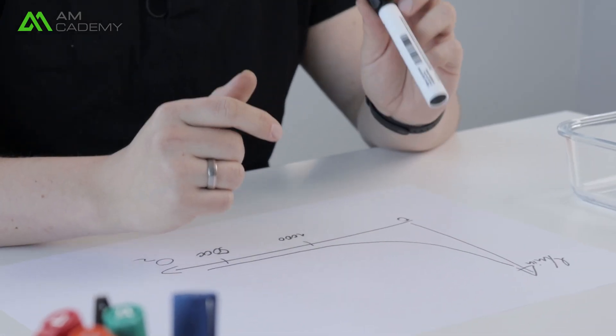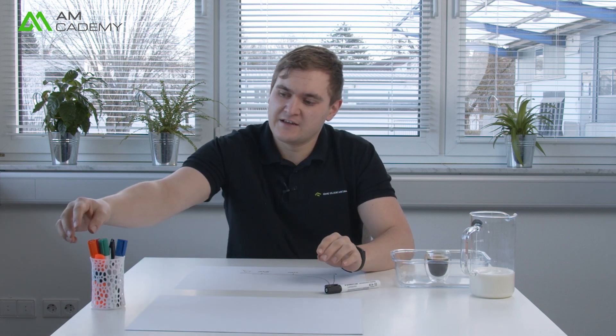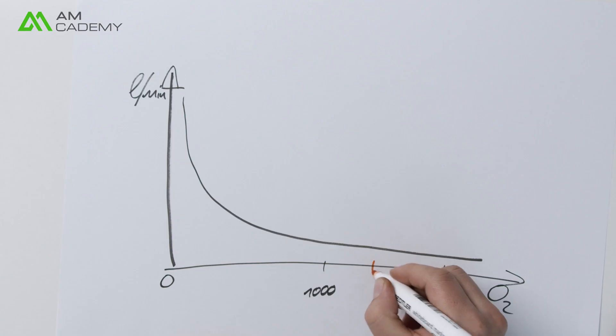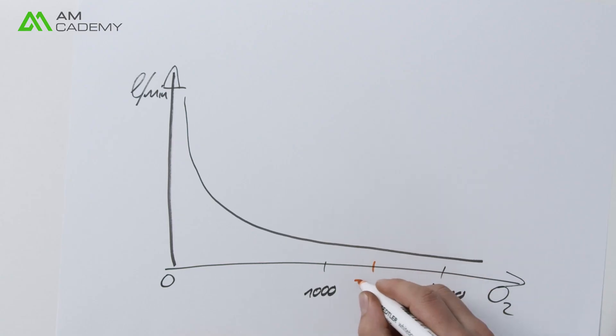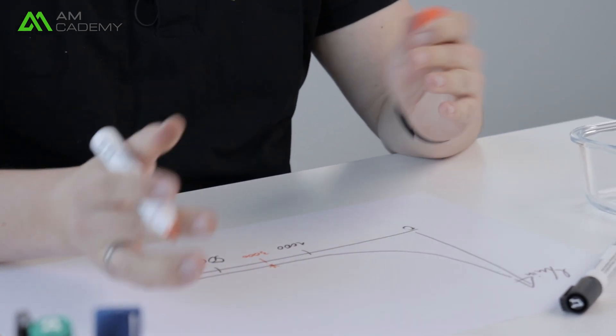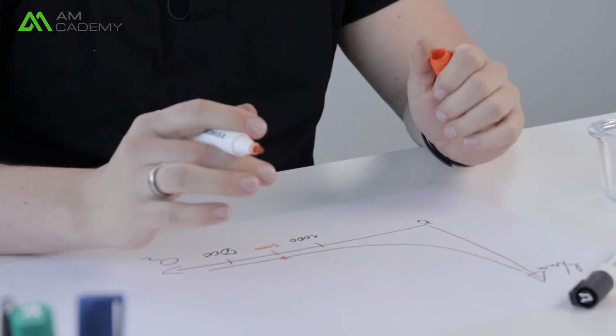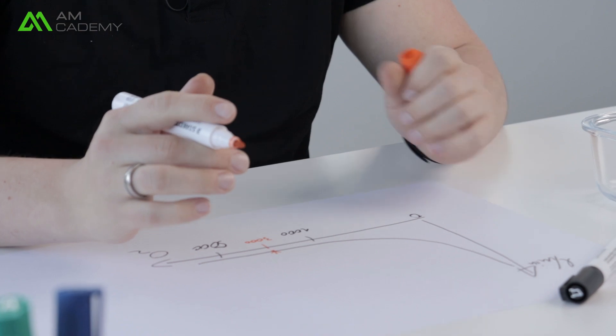What are some typical oxygen levels for different materials? A very common material is stainless steel, which is usually processed at around 3,000 ppm, and aluminum is also processed around that ppm level.